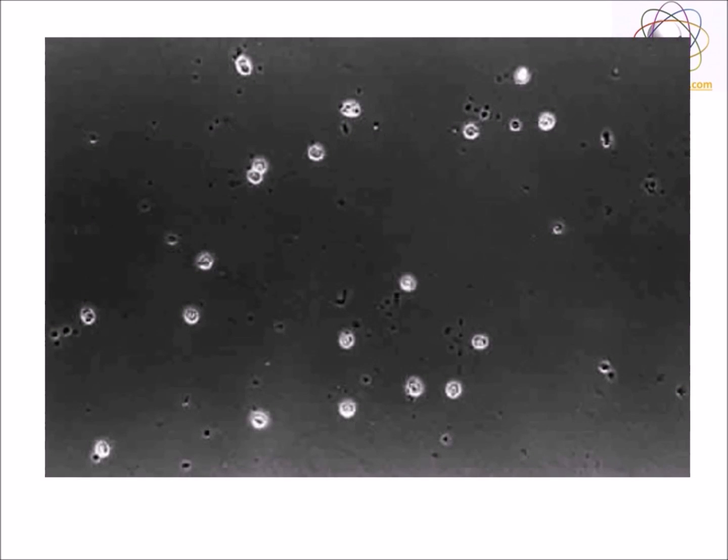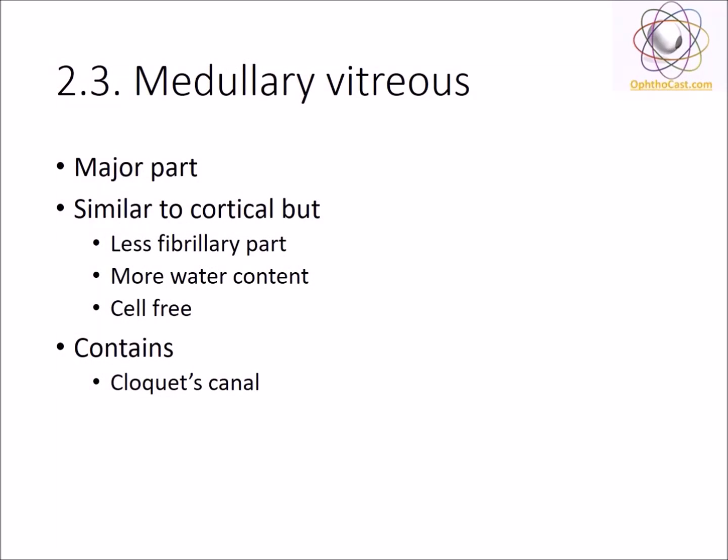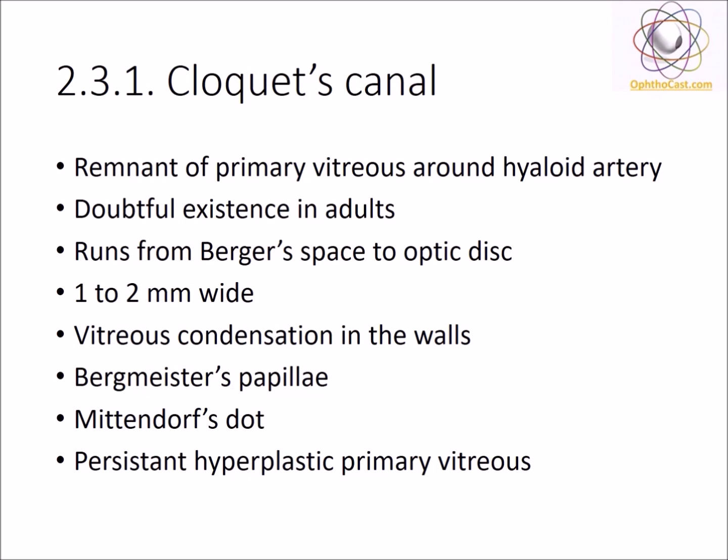Here you can see the hyalocytes. Medullary vitreous is the major central part. It is similar to cortical vitreous but is less fibrillary, contains more water and cell-free areas. Medullary vitreous also houses Cloquet's canal, which is a remnant of primary vitreous around the hyaloid artery with doubtful existence in adults. It runs from Berger's space to the optic disc and is 1–2 mm wide. The embryological remnants seen in this canal are Bergmeister's papillae, Mittendorf's dot, and persistent hyperplastic primary vitreous.